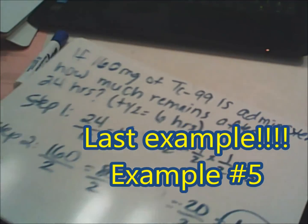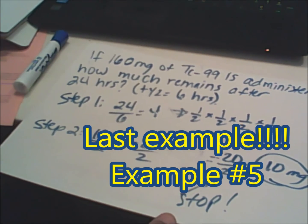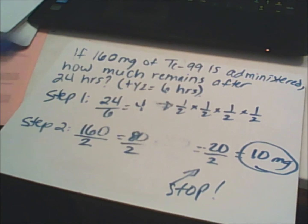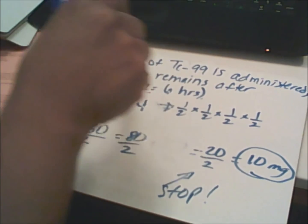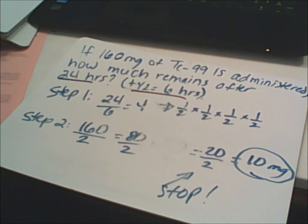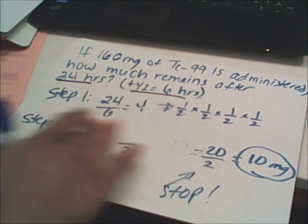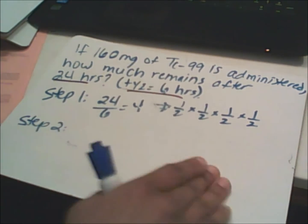Let's do one more — if this goes too fast, pause and rewind. Here's our last problem: if 160 milligrams of technetium-99 is administered, how much remains after 24 hours? The half-life is 6 hours, so every 6 hours your technetium-99 is depleting in the system.